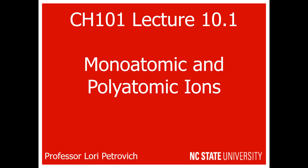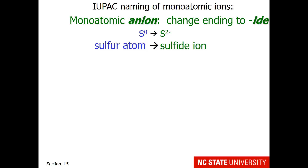Lecture 10 begins with a discussion of naming for monoatomic and polyatomic ions. Our naming convention is going to come from IUPAC, the International Union of Pure and Applied Chemists. This is a worldwide agreement on how to name things.